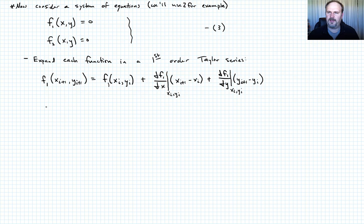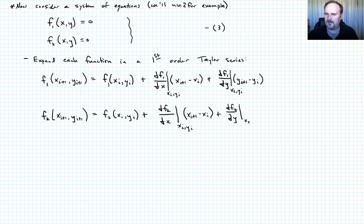The second function expansion looks like F2: X of i plus 1 Y of i plus 1 is equal to F2 of X sub i Y sub i, plus partial of F2 with respect to X evaluated at X sub i Y sub i times X i plus 1 minus X sub i, and then plus partial of F2 with respect to Y evaluated at X sub i Y sub i times Y of i plus 1 minus Y of i. Let's collectively call those equations 4.